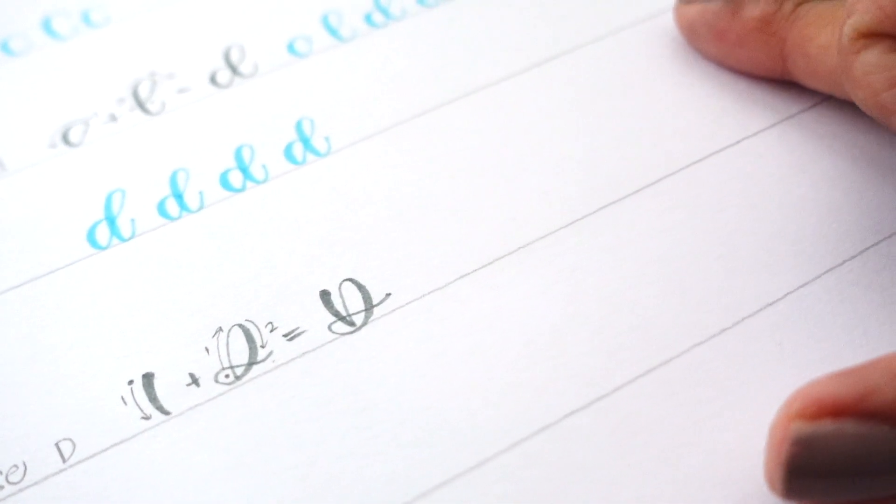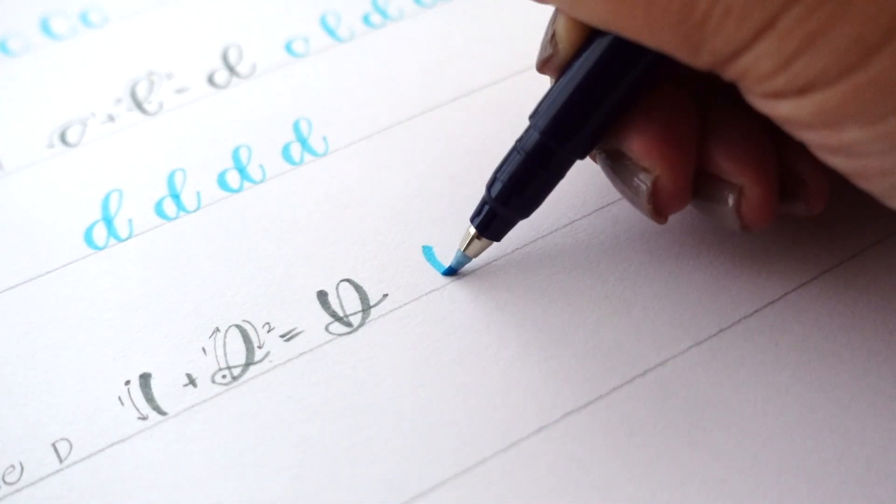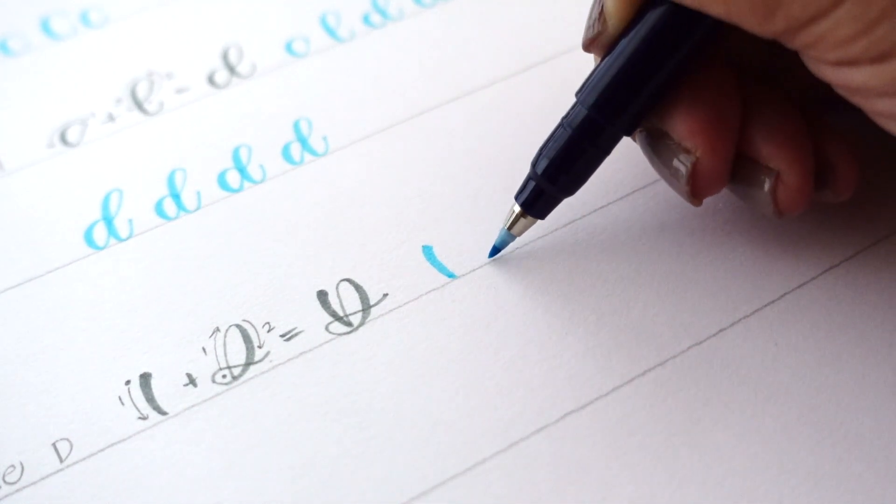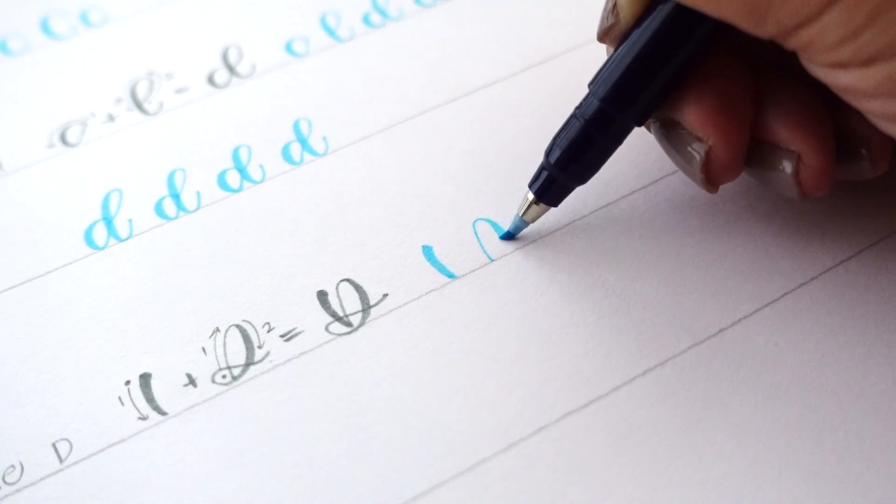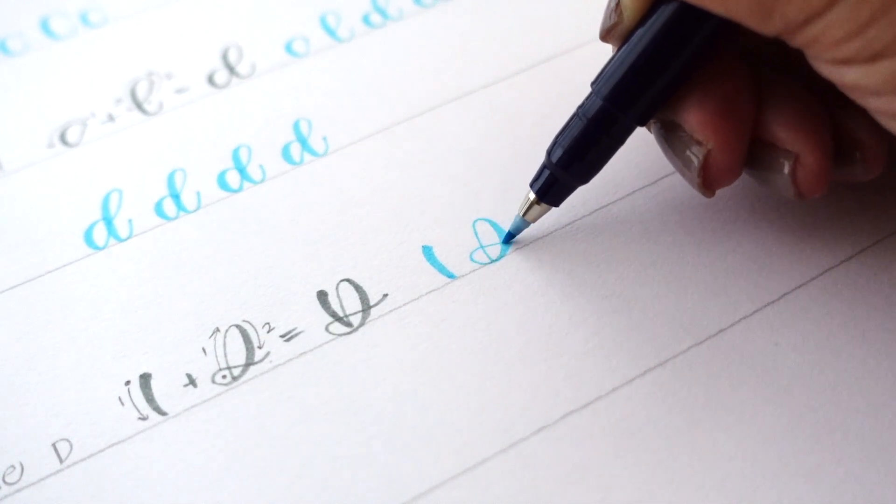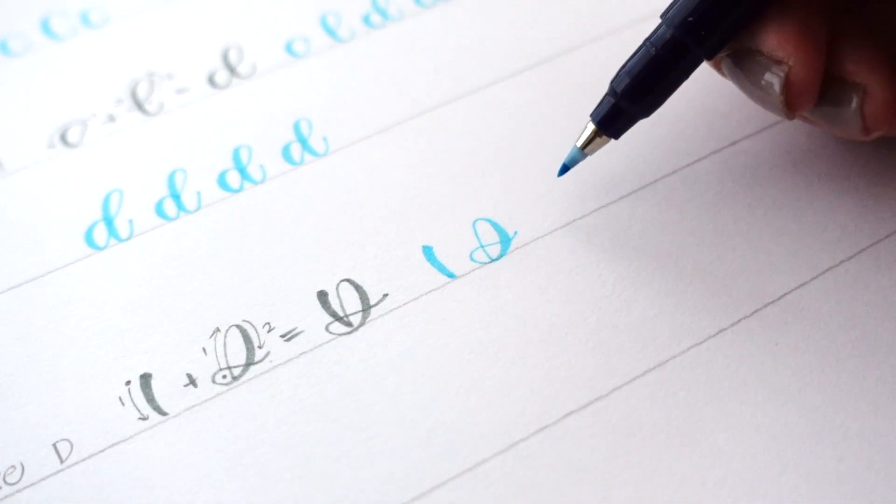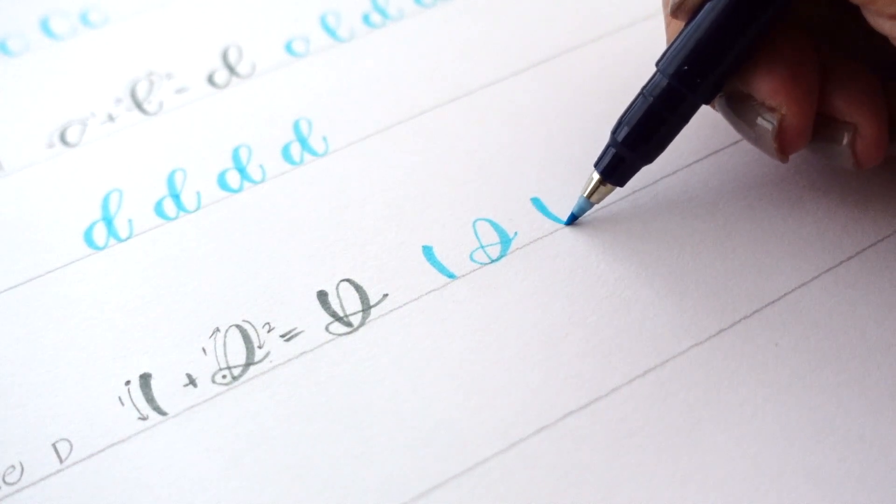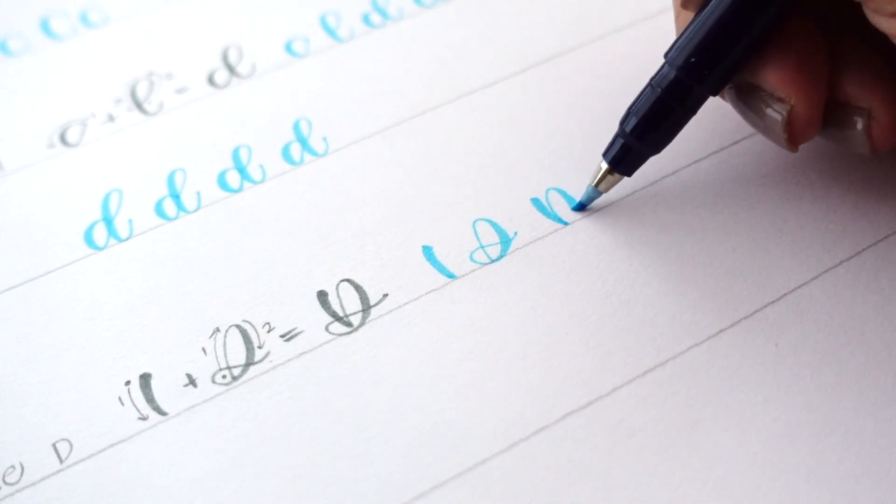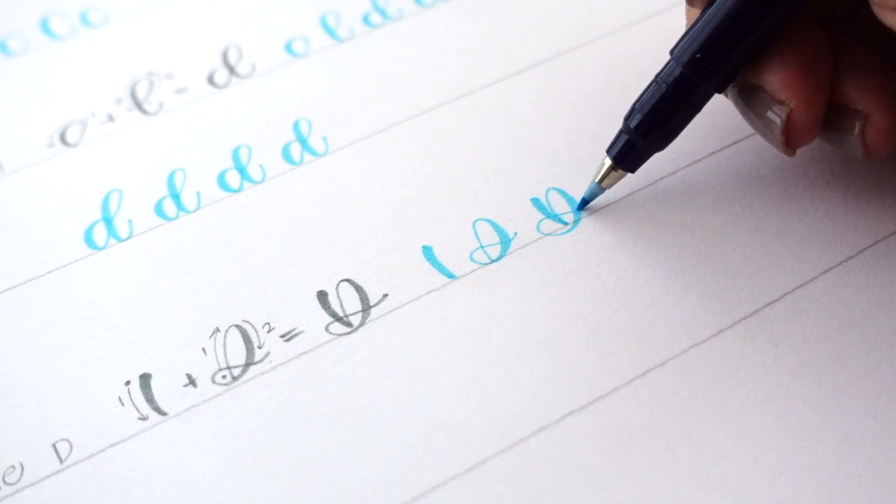I've seen brush lettering artists and calligraphers create uppercase Ds similar to a traditional cursive D, and traditional calligraphy styles do have a specific way of writing the uppercase D. Once you find your style, it's totally up to you to determine which way you'd like to write this letter.